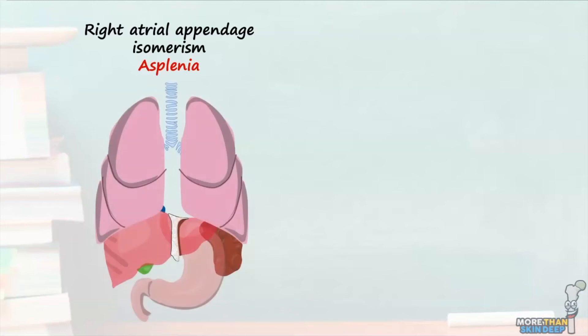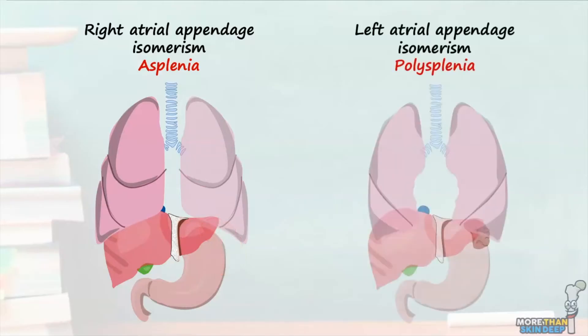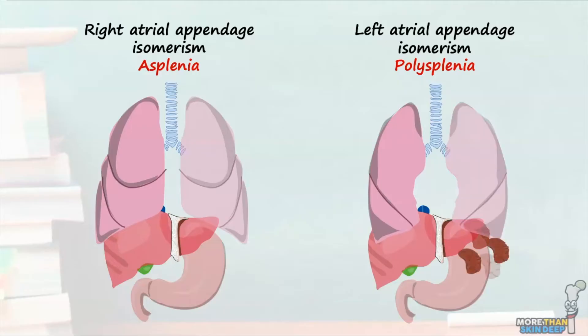When considering atrial isomerism, which can sometimes be referred to as heterotaxy, it's worth knowing that isomerism can be seen in other asymmetrical organs of the body. In this image demonstrating right atrial appendage isomerism, we can see both lungs resemble the right lung as each lung possesses three lobes. These patients can also present with absence of a spleen. On the other hand, left atrial appendage isomerism can often present with lungs which both resemble the left lung due to the presence of two lobes. Interestingly, these patients often have multiple spleens known as polysplenia.